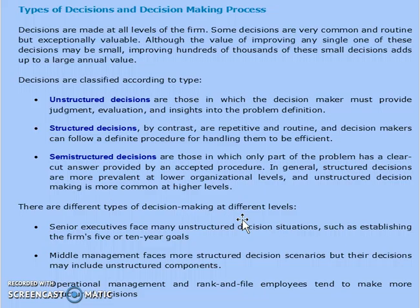The third and important decision type is semi-structured decisions. They are those in which only part of the problem has a clear-cut answer provided by an accepted procedure. In general, structured decisions are more prevalent at lower organizational levels, and unstructured decision-making is more common at higher, or strategic, levels. There are different types of decision-making at different levels.